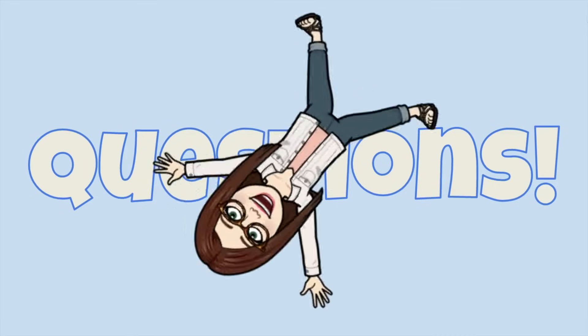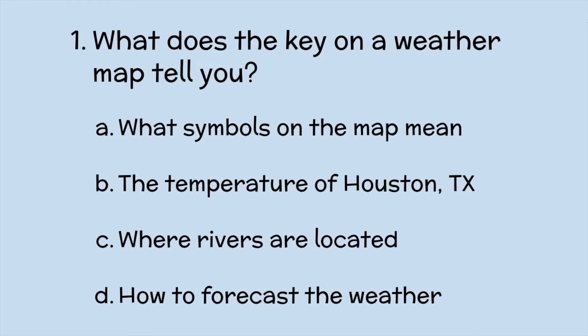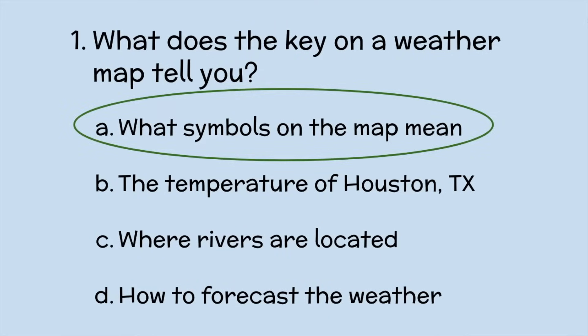So did you get all of that? Let's ask some questions and see if you remember the things you learned in today's lesson. Number one: What does the key on a weather map tell you? A — what symbols on the map mean? B — the temperatures of Houston, Texas? C — where rivers are located? Or D — how to forecast the weather? If you said A, what symbols on the map mean, you are correct. Great job.